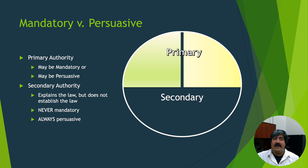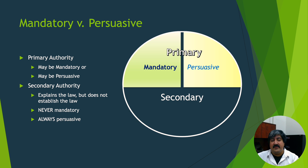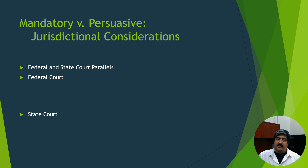Beyond primary and secondary, you should also consider whether these resources are mandatory or persuasive. Primary authority may be mandatory or persuasive, but secondary authority is never mandatory — it will always be persuasive. What we are really hoping to locate in legal research is primary authority that is also mandatory: the statutes, regulations, and cases that apply to the jurisdiction governing your client's legal question.